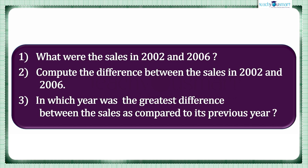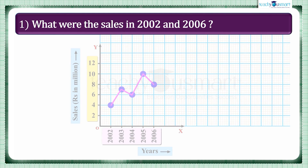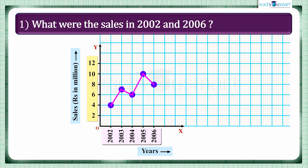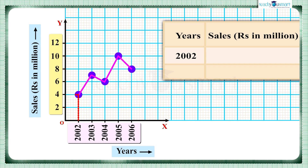Let's answer the questions one by one. The first question is: what were the sales in 2002 and 2006? Sales in 2002 were 4 million and sales in 2006 were 8 million.